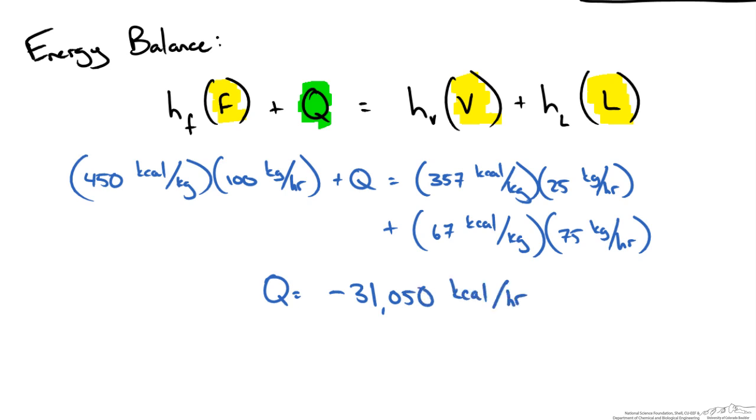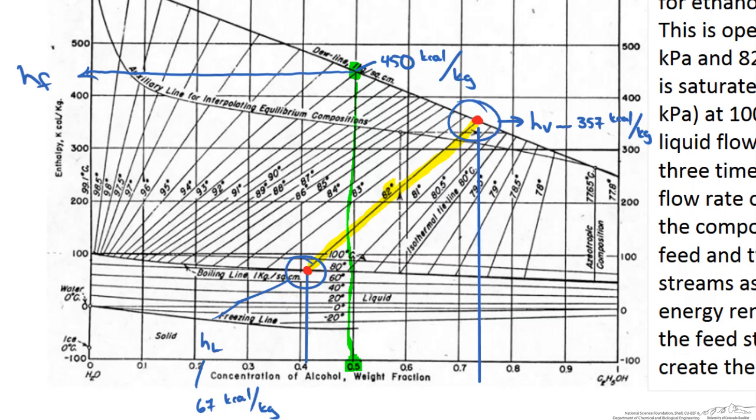We did not even know the temperature but again using the composition diagram we could easily determine this. If we look at the point where we have an enthalpy of 450 on our saturated vapor line this falls in line with 93 degrees Celsius. So if we have a saturated vapor then we know it is at 93 degrees Celsius.